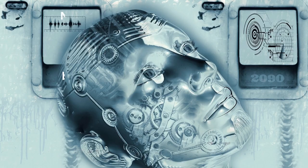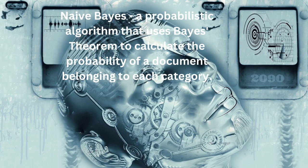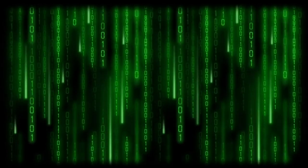There are several tools and algorithms that can be used for text classification. Some of the most commonly used tools include Naive Bayes, a probabilistic algorithm that uses Bayes' theorem to calculate the probability of a document belonging to each category.